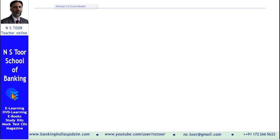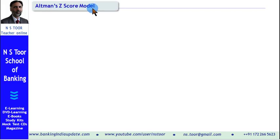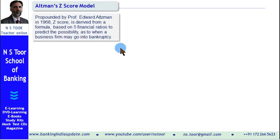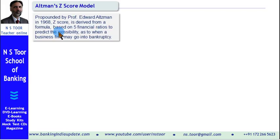Hello Friends! In this lecture, we are going to discuss Altman's Z-score model used for credit risk management. This model was propounded by Professor Edward Altman in 1968. This Z-score is derived from a formula based on 5 financial ratios to predict the possibility as to when a business firm may go into bankruptcy.